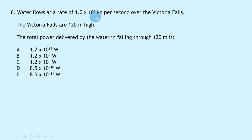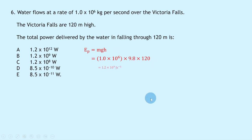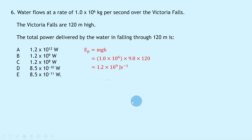Question 6: Water flows at 1.0 × 10⁶ kg/s over Victoria Falls, which are 120 m high. Using Ep = mgh with mass per second: 1.0 × 10⁶ × 9.8 × 120 = 1.2 × 10⁹ J/s. Since 1 J/s equals 1 W, this is already the power value: 1.2 × 10⁹ W — answer B.